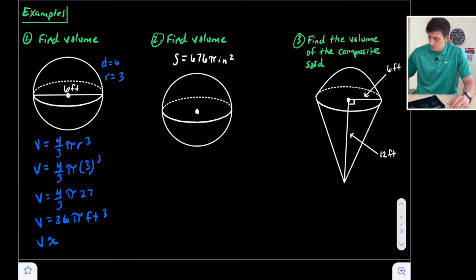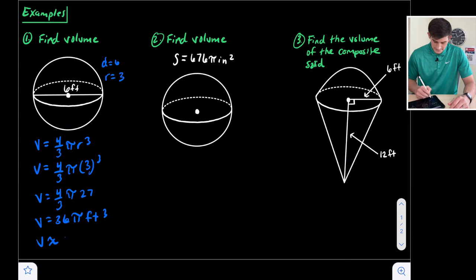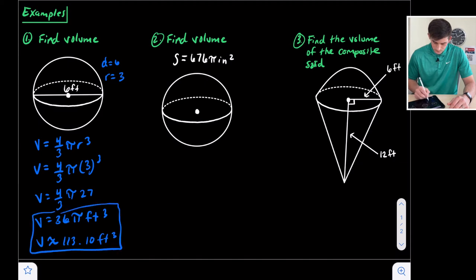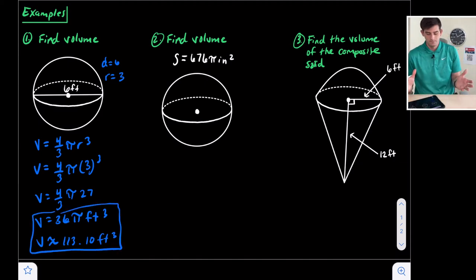Now we'll do 36 times pi in our calculator to give us our decimal approximation, and that's going to give us 113.10 cubic feet. So that would be our volume for number one.